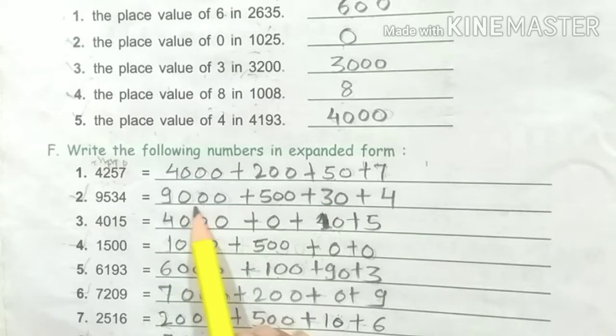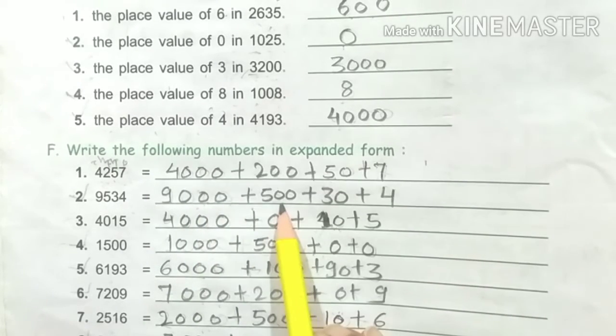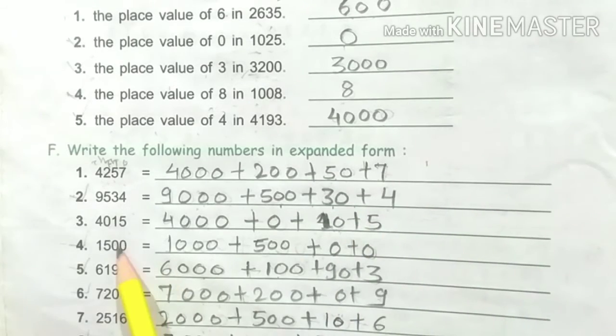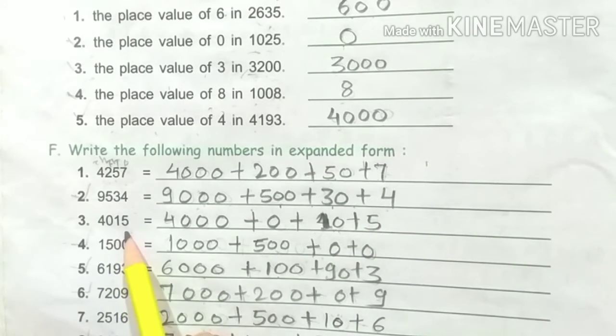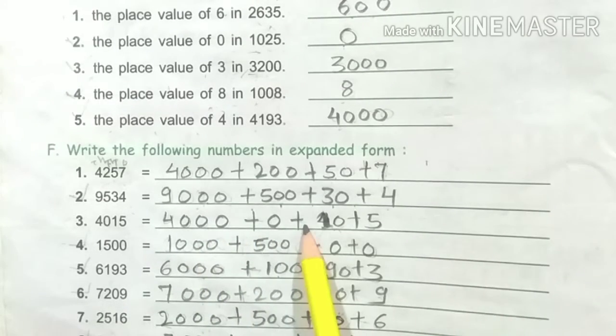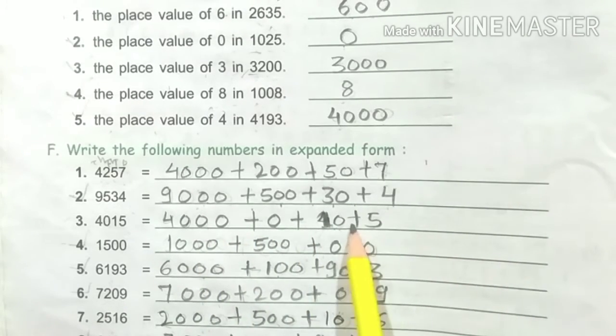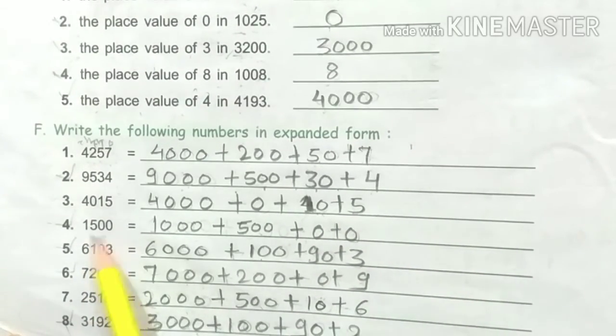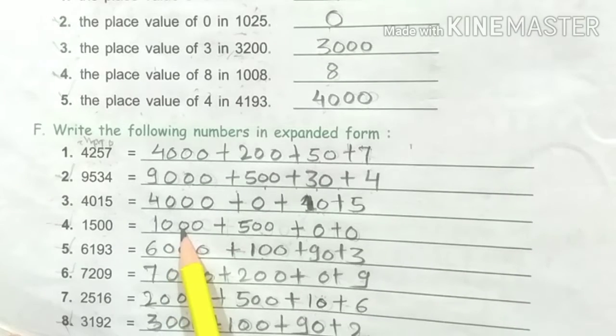Next, 9534. What is the expanded form? 9000 plus 500 plus 30 plus 4. Now next, 4015: expanded form is 4000 plus 0 plus 10 plus 5. Next, 1500: expanded form is 1000 plus 500 plus 0 plus 0.